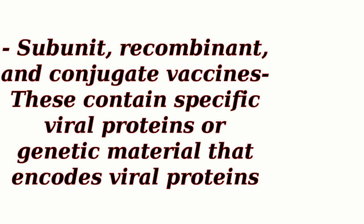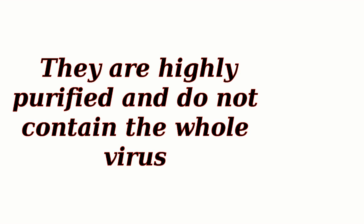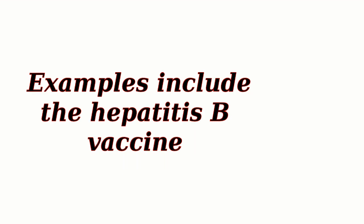Subunit, recombinant, and conjugate vaccines contain specific viral proteins or genetic material that encodes viral proteins. They are highly purified and do not contain the whole virus. Examples include the hepatitis B vaccine.